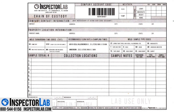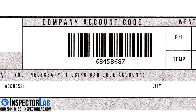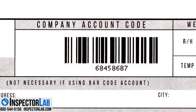Missing or incomplete information on the chain of custody may result in the samples being placed on hold until you can be reached to clarify and/or fill in the missing portions of the chain of custody form. The downloaded chain of custody has a customized barcode in the top middle of the form, which is unique to you.